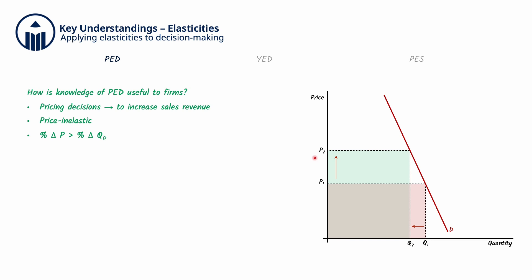will lead to a less than proportionate fall or decrease in quantity demanded from Q1 to Q2. As you can see on the diagram, the gain in revenue from raising the price, which is the box here,